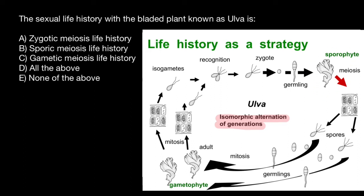Let's start here. This plant is the sporophyte, and the sporophyte produces spores. The sporophyte is diploid; spores are haploid. Spores have four flagella, so it's easy to tell the difference between spores and gametes — gametes have two flagella, while spores have four flagella.